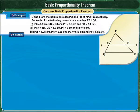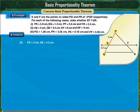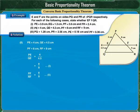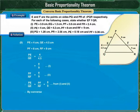For the second case, PE = 4 cm, QE = 4.5 cm, PF = 8 cm, RF = 9 cm. The ratio PE upon QE = 4 upon 4.5 = 8 upon 9. The ratio PF upon RF is also 8 upon 9. Therefore, PE upon QE equals PF upon RF equals 8 upon 9. Since these two ratios are equal, by the converse of basic proportionality theorem, EF is parallel to QR.